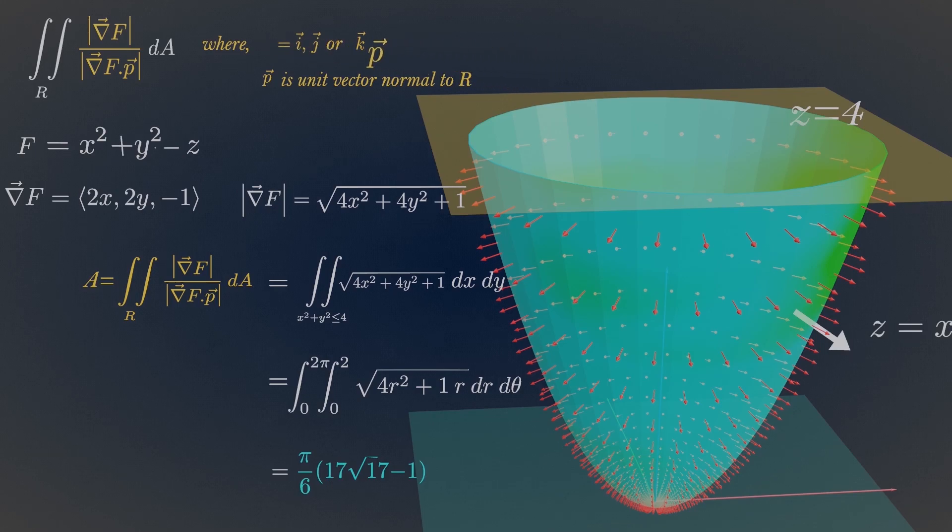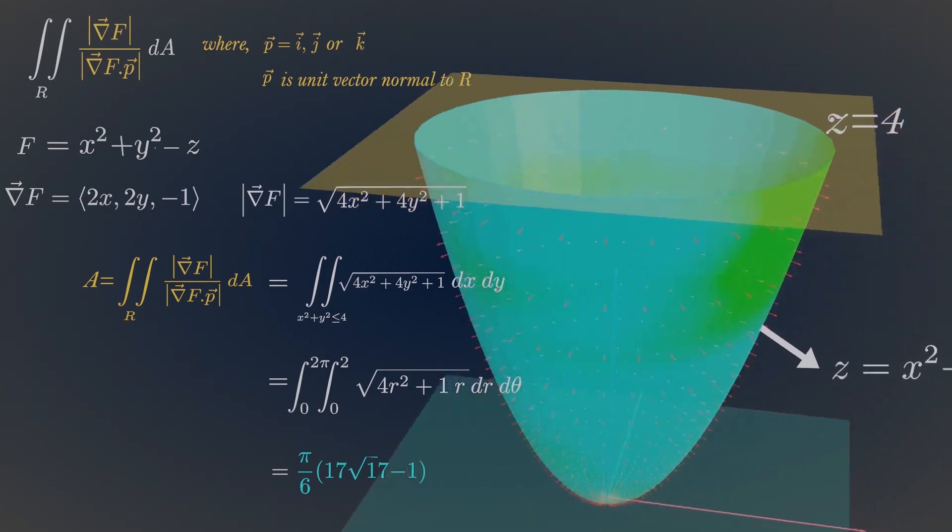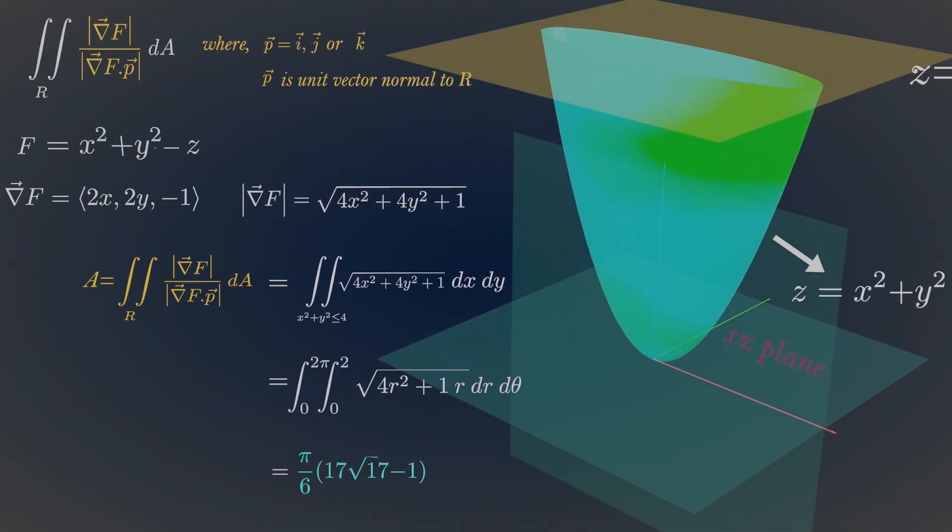Now you need to find the unit p vector. If you project this paraboloid into x, z plane, then unit p vector is equal to unit j vector.